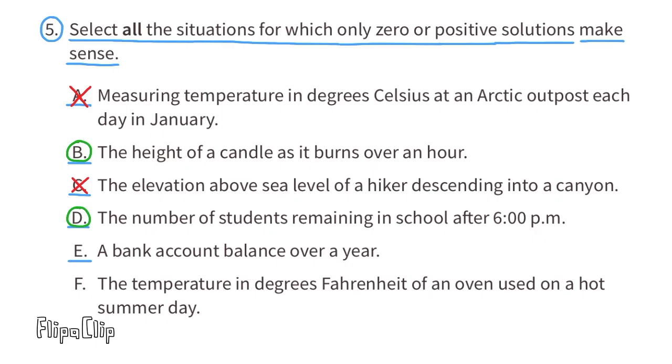E. A bank account balance over a year. This one's a little bit tricky too, but sometimes people withdraw or spend too much money, so their balance goes into a negative. So the solution for this one could be negative, 0, or positive. So this one does not make sense to have the solutions only 0 or positive.